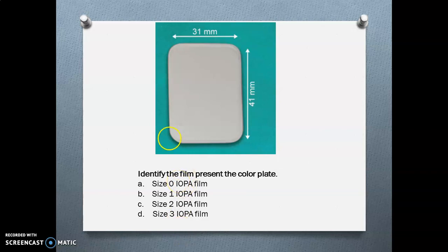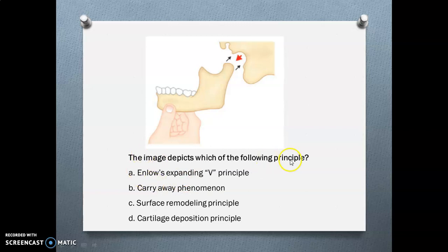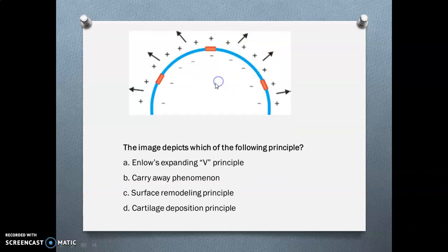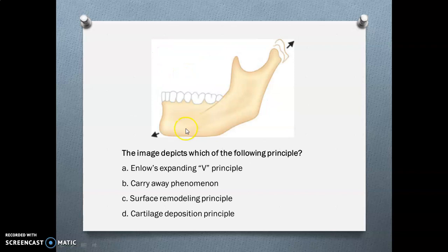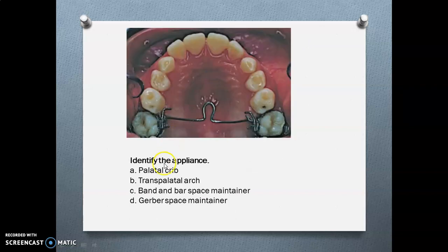This image depicts the carry-away phenomenon — not the annulus expansion principle. When there is growth of soft tissues and muscles, the mandible grows forward away from the cranial base. The diagram shows the cranial base and the mandible. This next picture depicts surface remodeling — deposition and resorption of bone. The condyle image shows cartilage deposition. And this appliance is the transpalatal arch, which can be used for space management when one side of the arch is intact and the other has tooth loss.